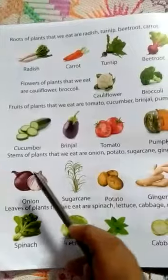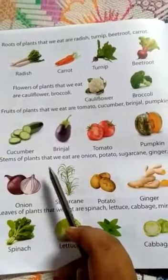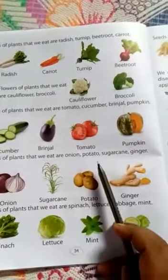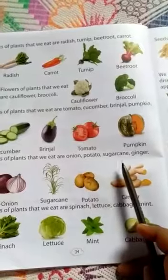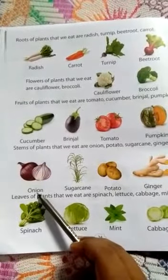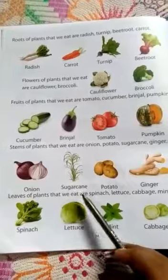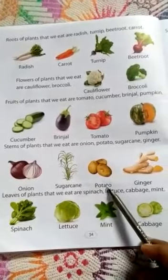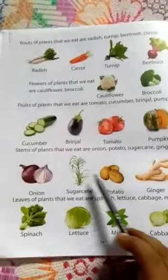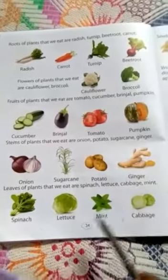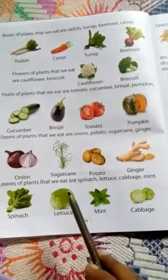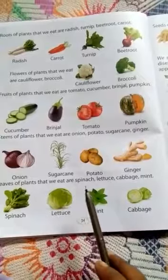Next is stem. The stems of plants that we eat are onion, potato, sugarcane, and ginger. Pictures are also given there — onion, sugarcane, potato, and ginger. These are the stems of plants.